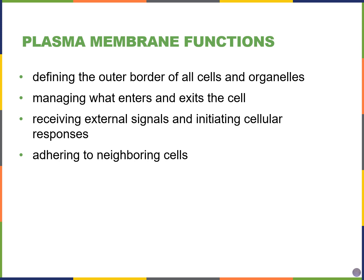The first function includes being an outer border of cells and of membranous organelles. Because it is the outer border of the cell, it controls what can enter and exit the cell. The membrane will also be involved in receiving signals from the external environment, and sometimes these signals will result in initiation of certain signals or cellular responses inside the cell. Finally, the cell membrane can also allow the cell to stick to or adhere to neighboring cells.